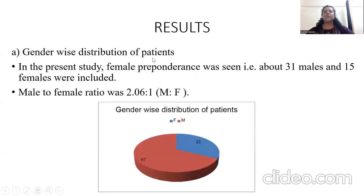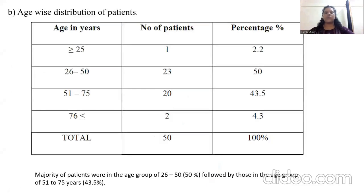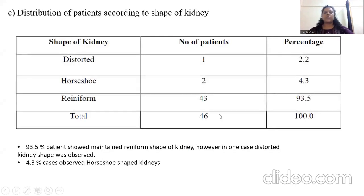Coming on to the results: this is the gender-wise distribution of the patients. In the present study, about 31 patients were male and 15 were female. The male to female ratio was 2.06 to 1. The majority of patients were in the age group of 25 to 60, followed by the age group of 51 to 75 which were 43%. Regarding the shape of the kidney, about 93.5% of patients showed maintained reniform shape of the kidney. However, one showed a distorted kidney and about 4.3% of cases showed horseshoe-shaped kidneys.